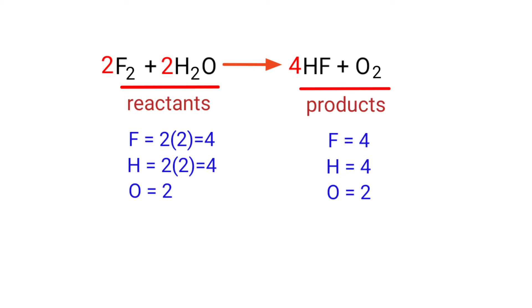The equation is now balanced. There are four fluorine atoms, four hydrogen atoms, and two oxygen atoms on both sides.